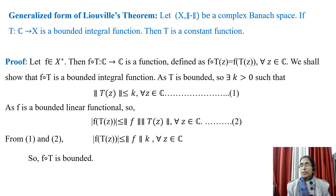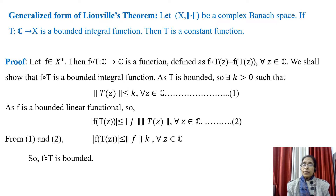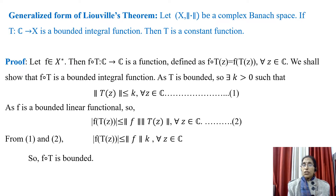The theorem states that: let X with norm be a complex Banach space. If T is a mapping from the set of complex numbers to X and is a bounded entire function, then T is a constant function. That means we shall prove that any bounded entire function from ℂ to a complex Banach space is constant.